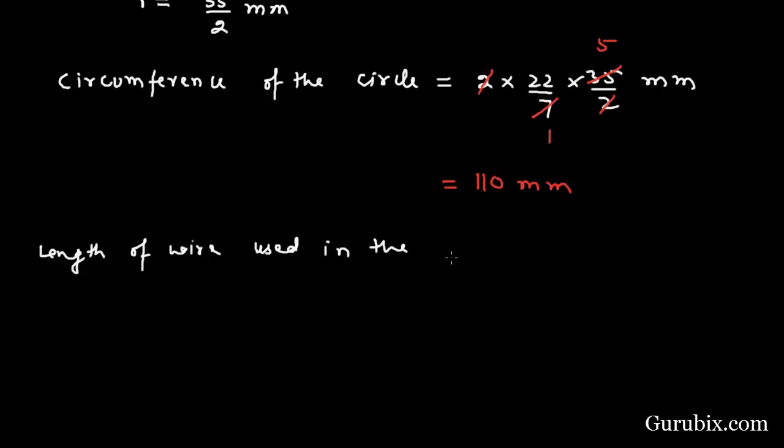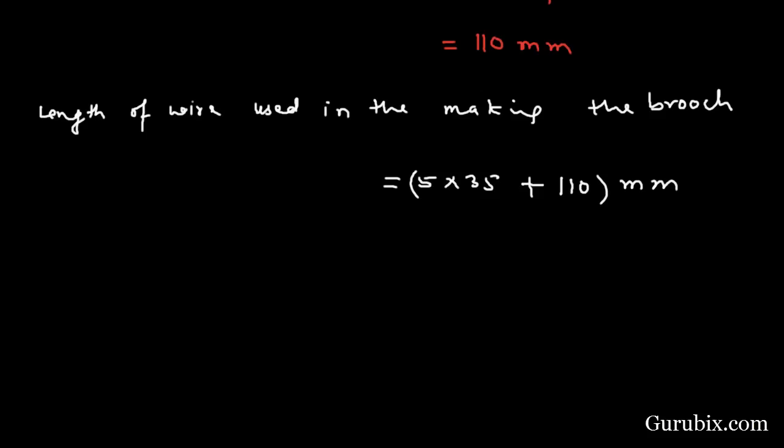...equals five times 35 because five diagonals are used of length 35 millimeter, and circumference of the circle that is 110 millimeters. This equals 110 millimeters, this equals 285 millimeters.